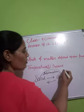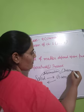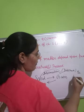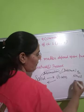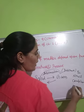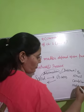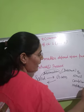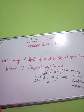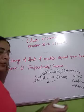The substances in which this process occurs are known as sublime substances. Examples of sublime substances include iodine, ammonium chloride, camphor, and naphthalene. These substances directly convert into the gaseous form.